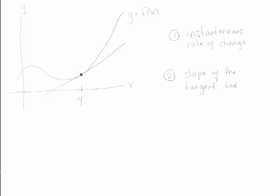Later on, we'll learn more ways to think about the derivative, but for now, the two things I really want you to remember are the instantaneous rate of change of a function, how fast that function is changing, and the slope of the tangent line to a function at a particular point.